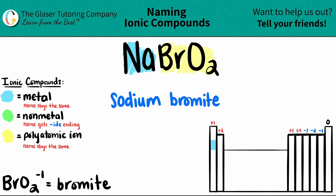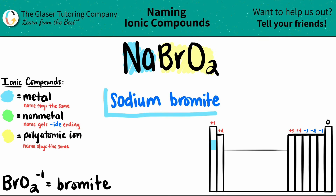Now just do a double check. Since sodium is not part of your transition metals — it's not in that little block — I don't need a Roman numeral. So I found the answer: NaBrO2 is sodium bromite. And that's it! Hopefully this helped. Let me know in the comments. I hope you guys have a great day — let's keep studying hard and I will see you all in the next lesson.